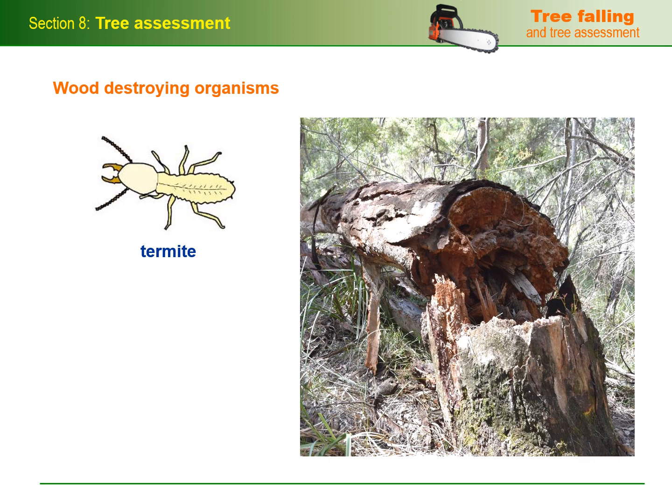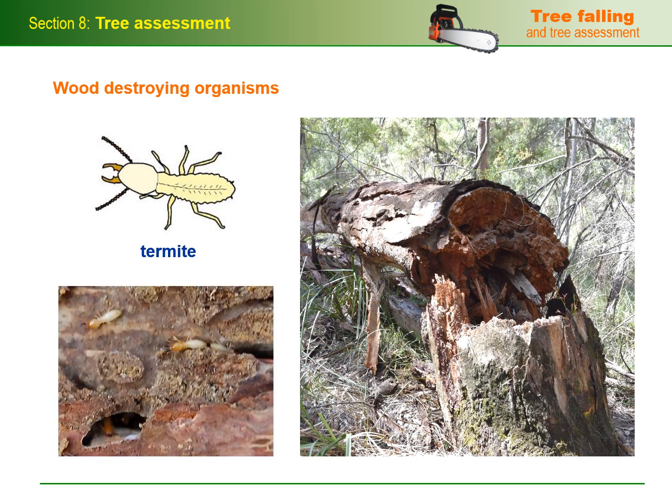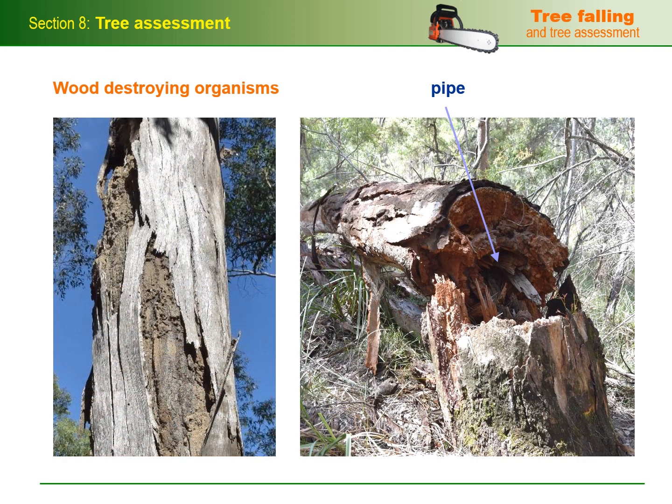Termites are another wood-eating organism. They're sometimes called white ants because many species have a whitish colour, but in biological terms they're actually more closely related to cockroaches. It's common for some species of termites to eat out a pipe through the middle of the trunk and into the branches. From the outside of a tree, termite activity can be difficult to detect; however, there's sometimes evidence of galleries and mud runways under the bark.